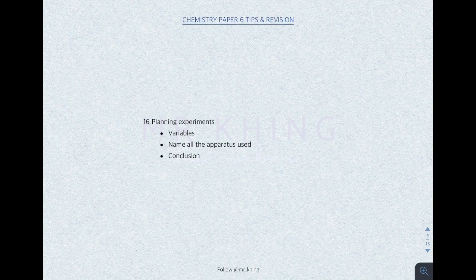When tackling planning experiment questions, always make sure your answer includes three things. First, variables — make sure controlled variables, manipulated variables, and responding variables are mentioned in your steps. Examples of controlled variables: the mass of solid used, the volume and concentration of solution used. Second, name all the apparatus used. Third, include a general conclusion that gives a direction.